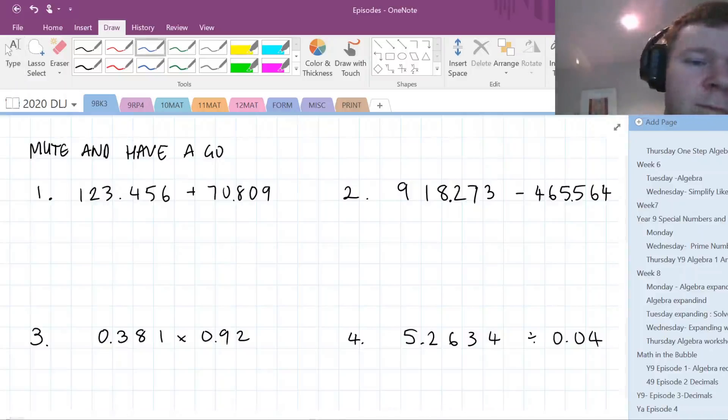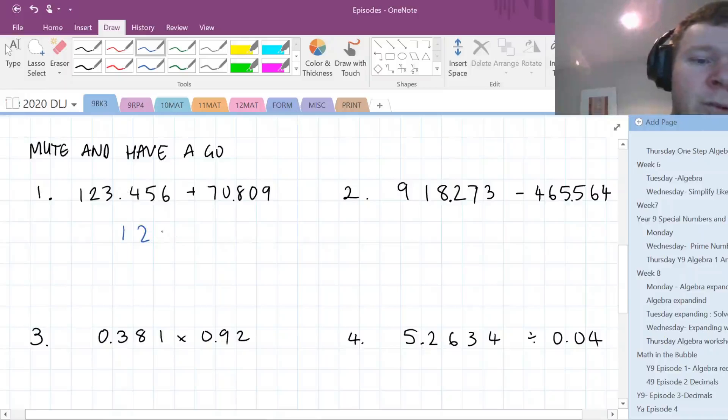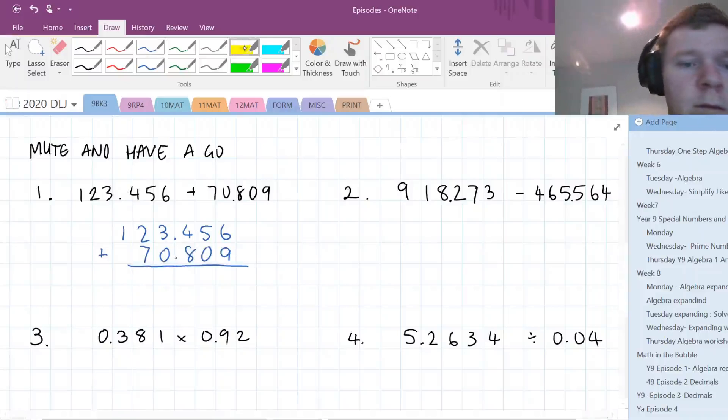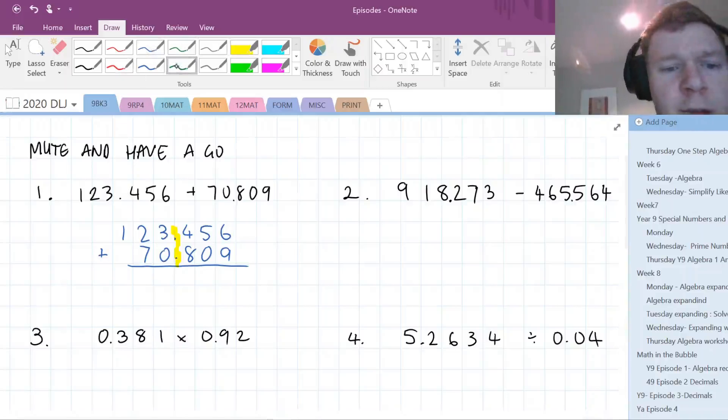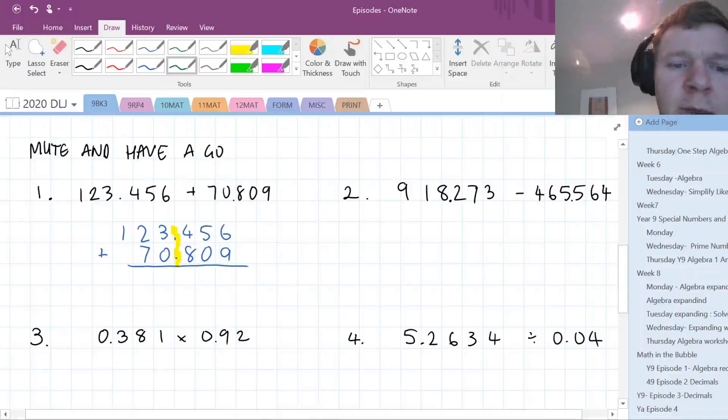Number 1. First we want to rewrite this using our math book squares so that everything is on the right spot and our decimal places are lined up.